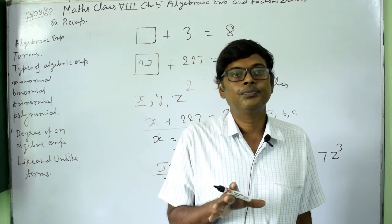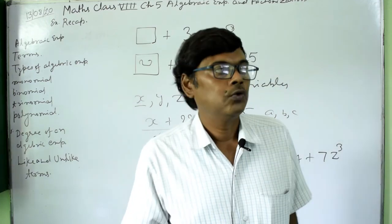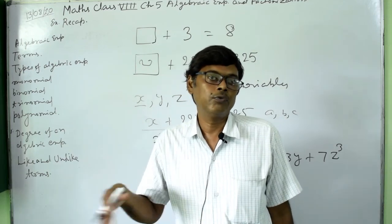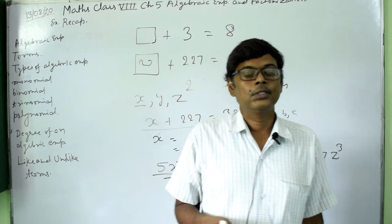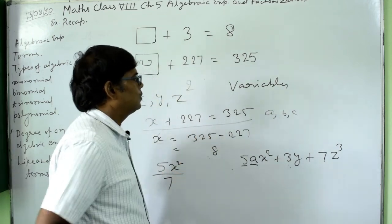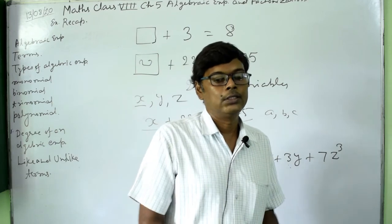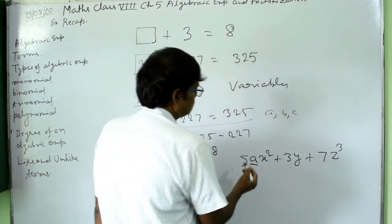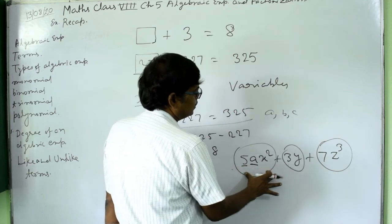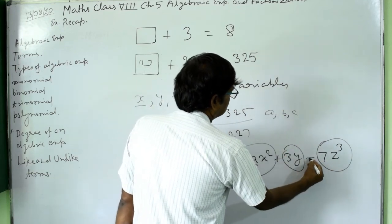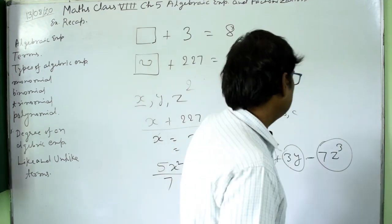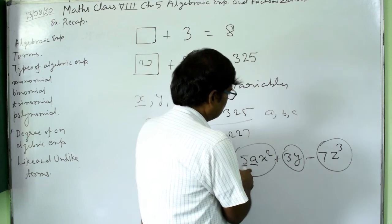Algebraic expressions are formed when we want to find the solution to a problem. In that process we get these expressions, and then we find the solutions to get the answer. The parts of an expression are called terms — terms are separated by plus or minus signs.